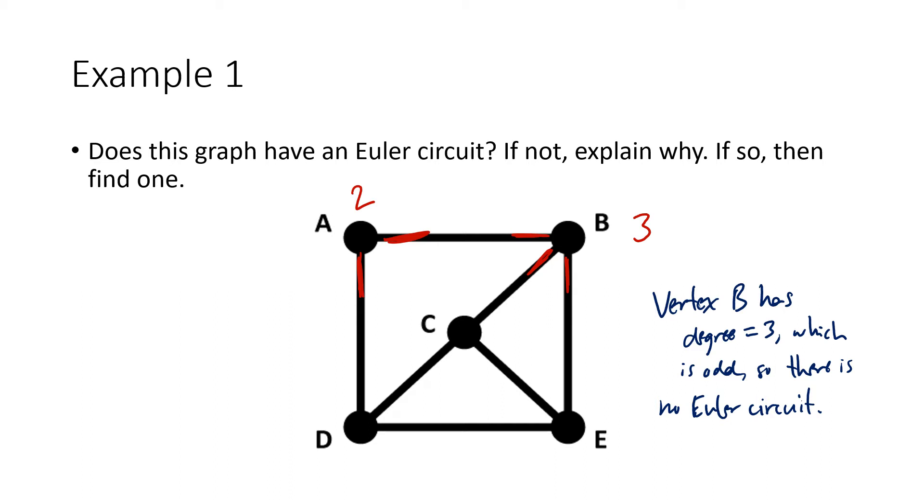Now, if we had kept going, we would have seen that C also has odd degree. C has degree 3, one, two, three edges. D also has degree 3, one, two, three edges. And E also has degree 3. So this graph really doesn't have an Euler circuit. But as soon as we find one vertex that has an odd degree, we can stop.